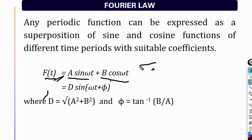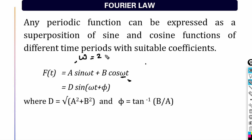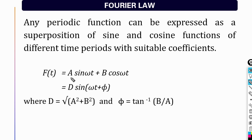A periodic function can be written as A sin(ωt) and B cos(ωt). If we observe the time period represented as omega, then omega is equal to 2π divided by capital T. We can choose different values — omega₁, omega₂ — and the result is also a periodic function.